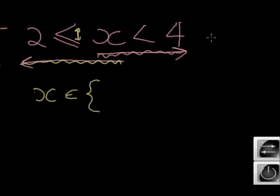X can be any value between 2 and 4. Unless we say x is an element of integers. In other words, x is only whole numbers. I didn't say that. That means x can be any value. X can be 2.